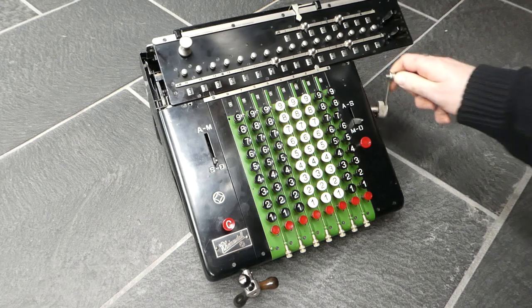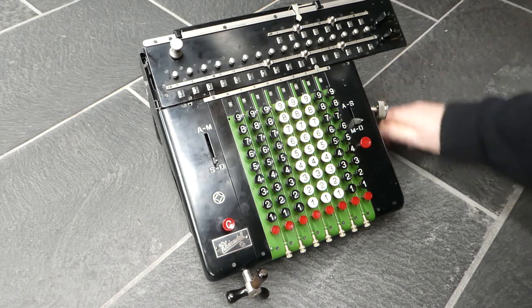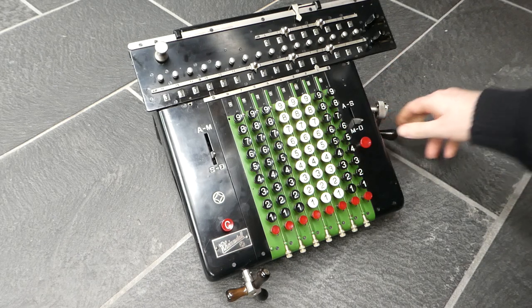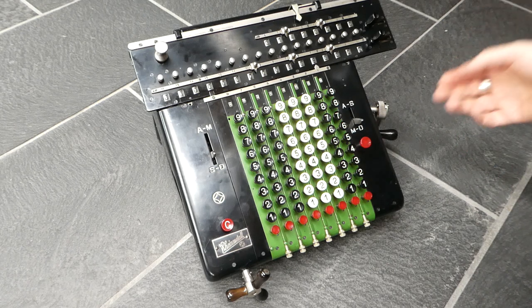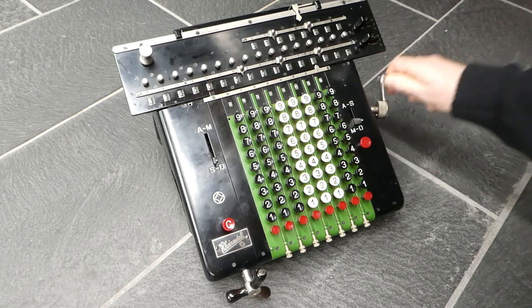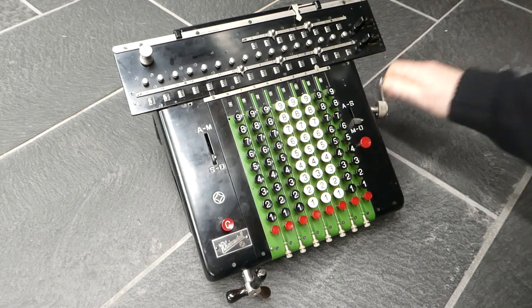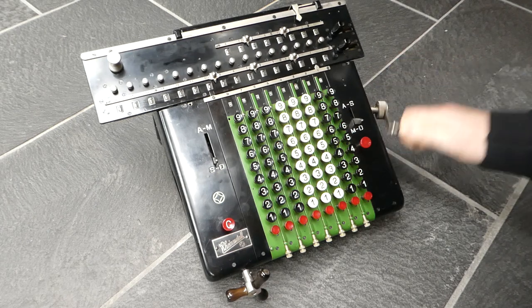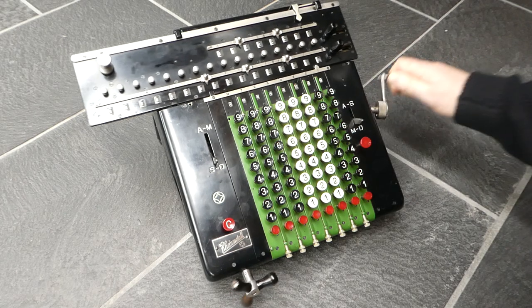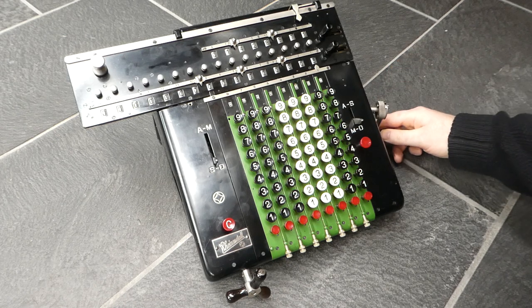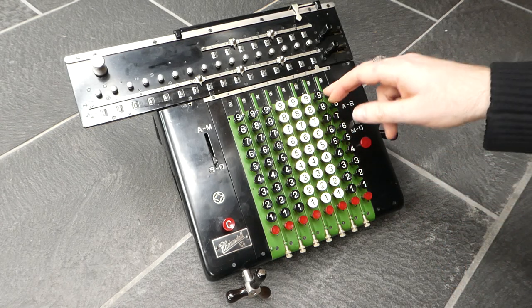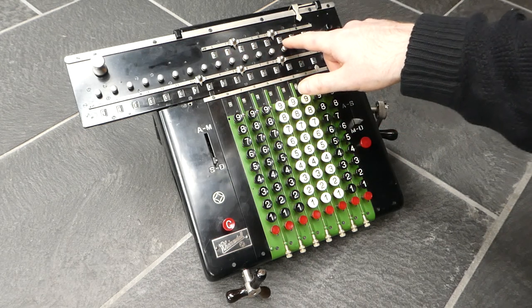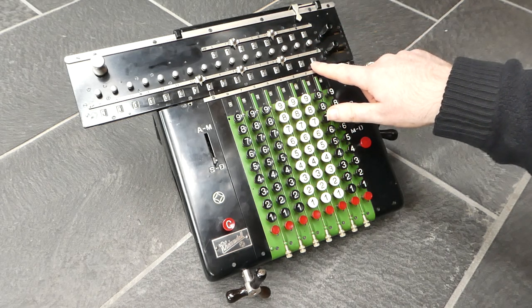And now I can go for the next subtraction. Each time it subtracts. So each time it subtracts until it underflows, it corrects that and shifts the carriage. There we go. So if I divide one by seven I get 0.1428571, and there's a remainder of three here left.